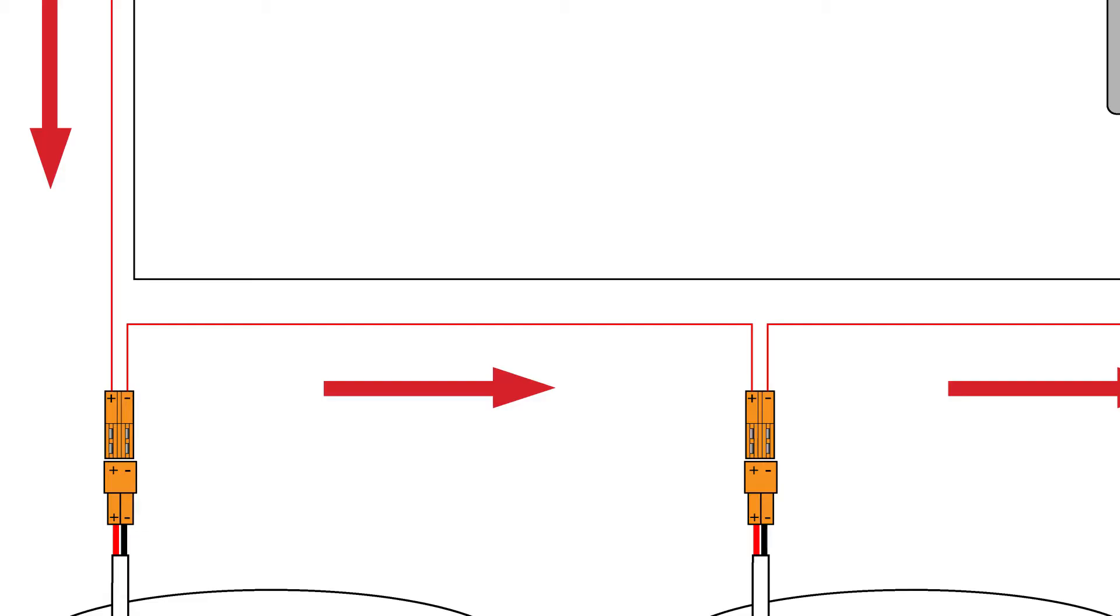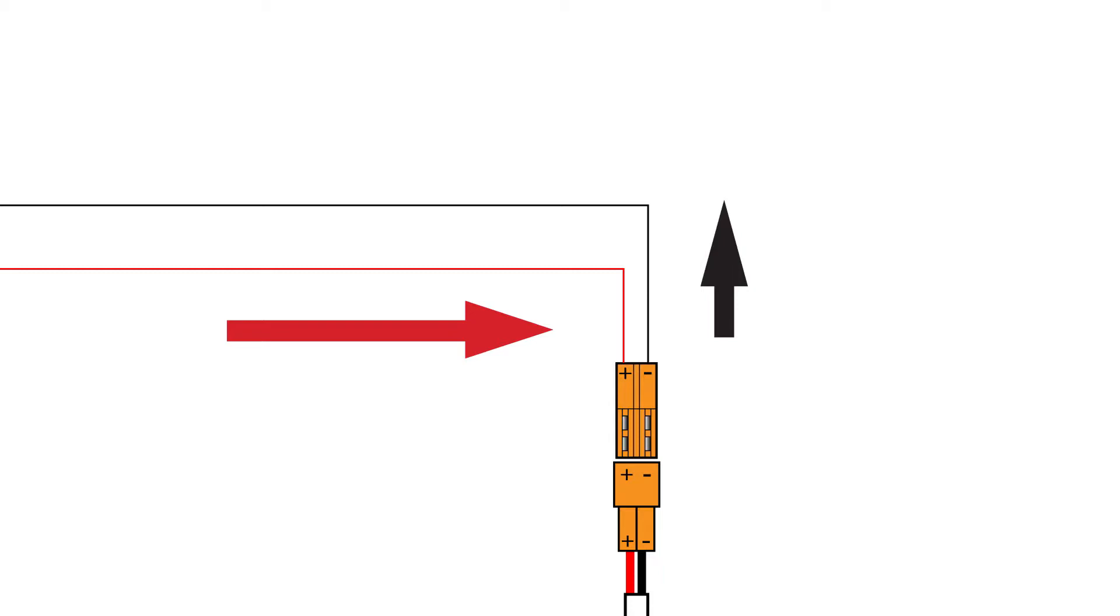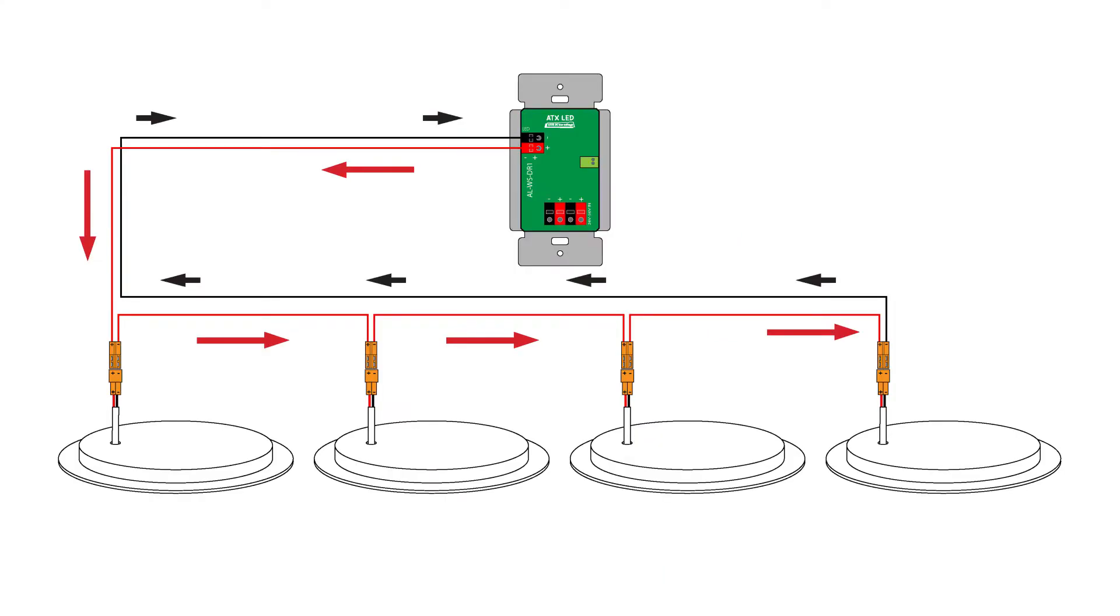In positive, out negative. The circuit is concluded by connecting the negative leg of the last light to the negative terminal of the switch. The circuit will fail if this order is not followed.